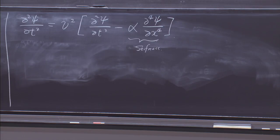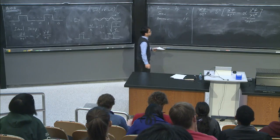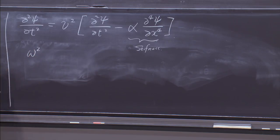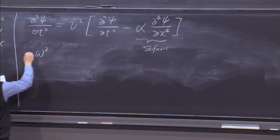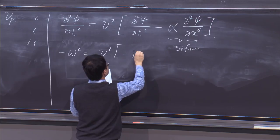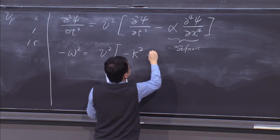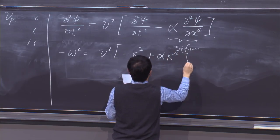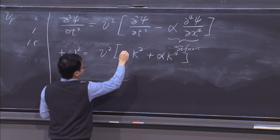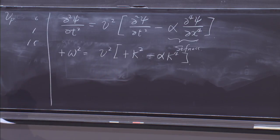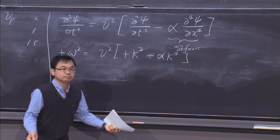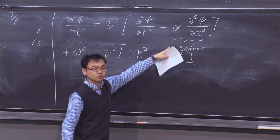Plugging the harmonic wave into the modified wave equation, the left-hand side gives −ω², and the right-hand side gives −v²k² plus α·k⁴ — wait, let me correct this: the ∂⁴ψ/∂x⁴ term gives +k⁴, and after careful signs, the relation between ω and k is now modified compared to the original. [After student correction] After cancelling the minus signs, the result becomes: ω² = v²k² + αk⁴.